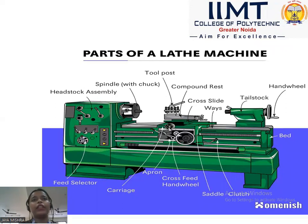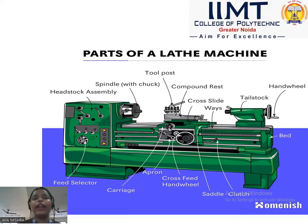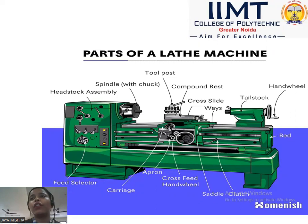Here is a diagram of the lathe machine which makes it easy to understand the various parts. The headstock is on the left side and the tailstock is on the right side. The headstock is stationary and the tailstock is movable. There is a long longitudinal rod called the guideways, on which the carriage is mounted. The rotating chuck is mounted on the headstock, and on the carriage the tool post and compound rest are mounted. The hand wheel is also present on the tailstock.